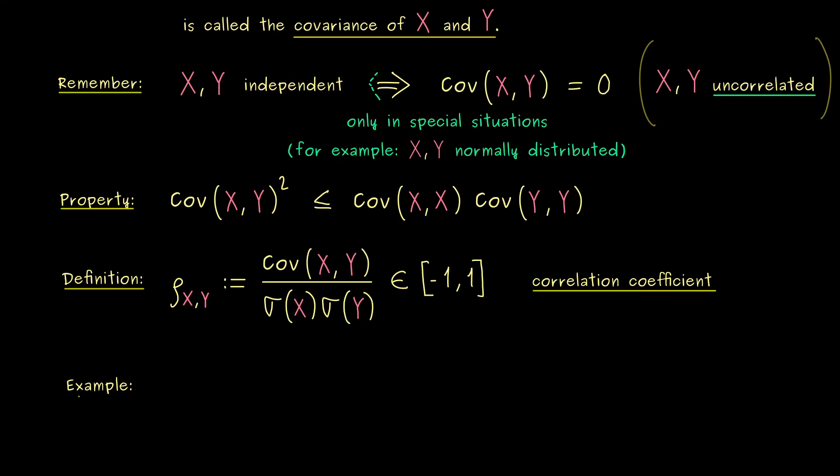In this video here now, I want to show you an example. Indeed, I want to show you that uncorrelated variables don't have to be independent. Also this means, for this example, we cannot use normally distributed random variables.